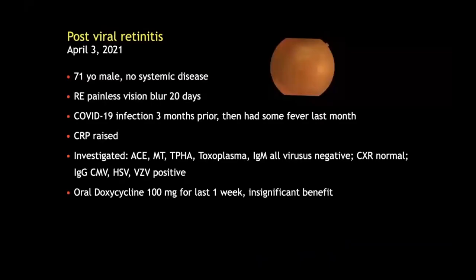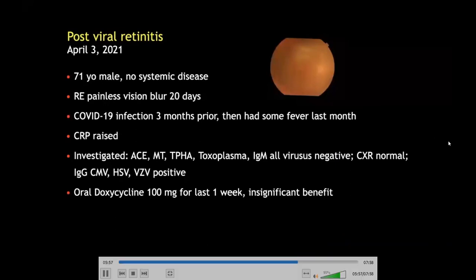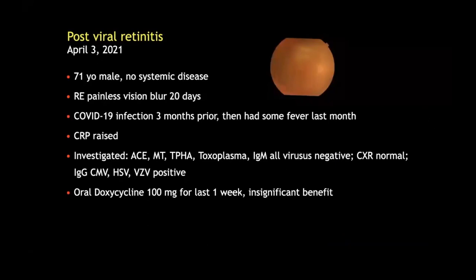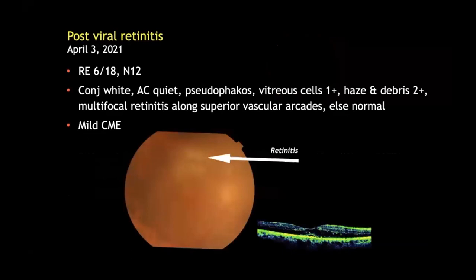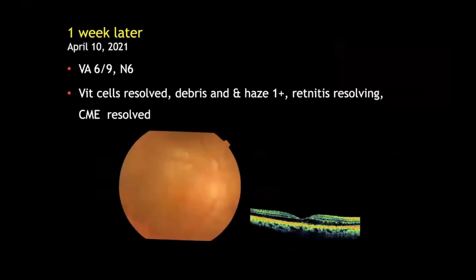A 71-year-old male presented in April this year with painless blurring of vision in the right eye for 20 days. He had had COVID infection three months prior and then some fever following that. He had been investigated for retinitis and all investigations were negative; he had been on doxycycline for a week with no benefit. We saw him with retinitis and vitreous cells and haze, and he was placed on oral steroids with rapid resolution at one week and complete resolution at eight weeks.